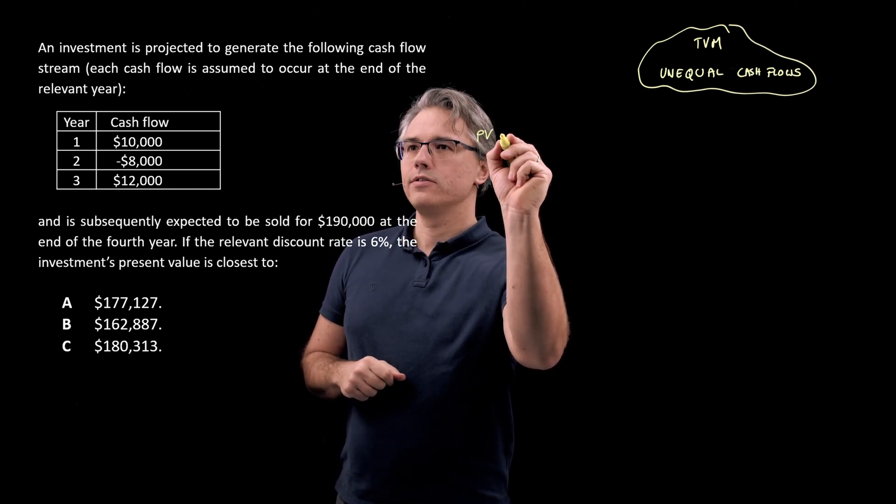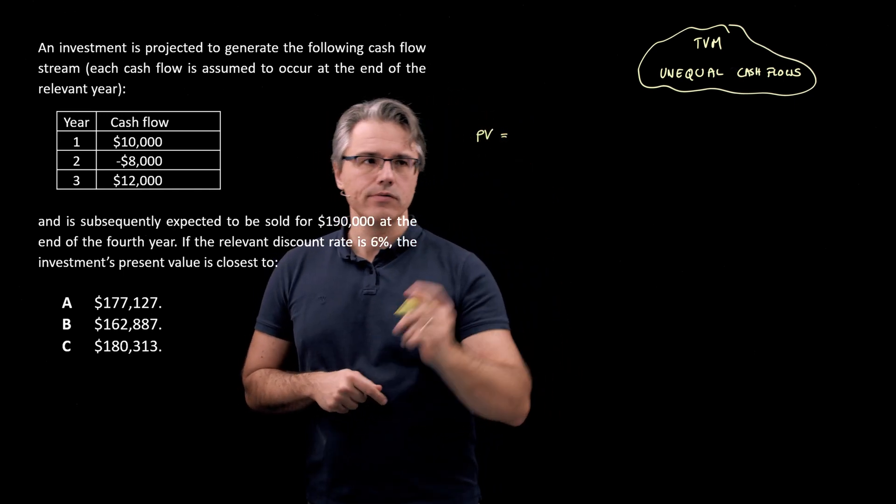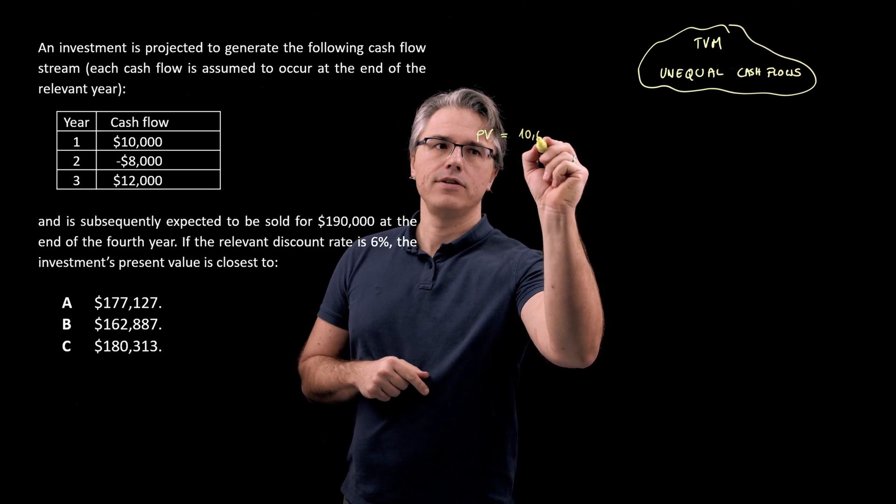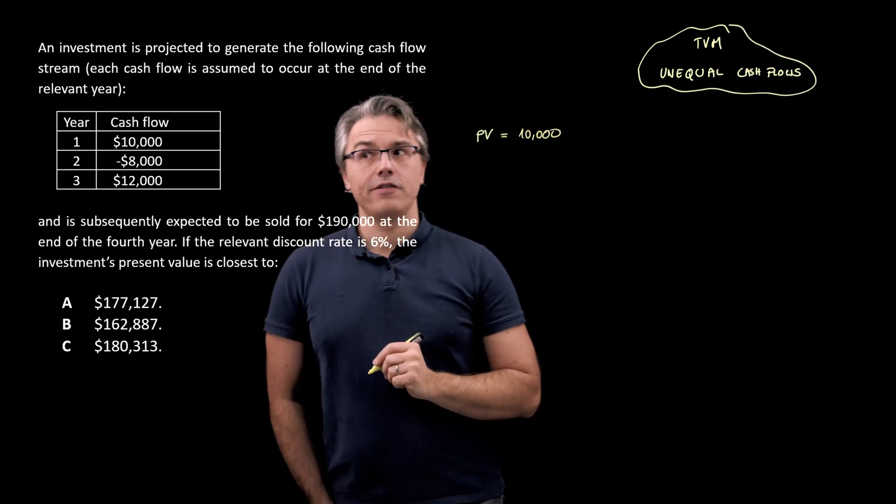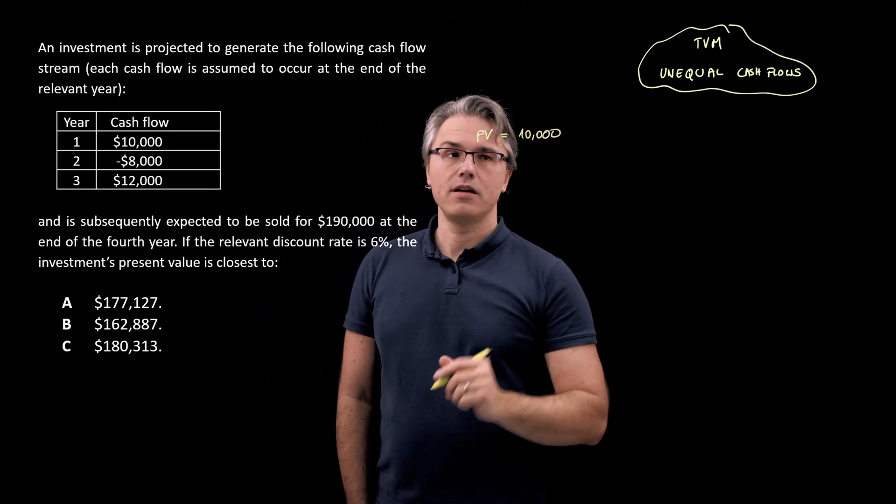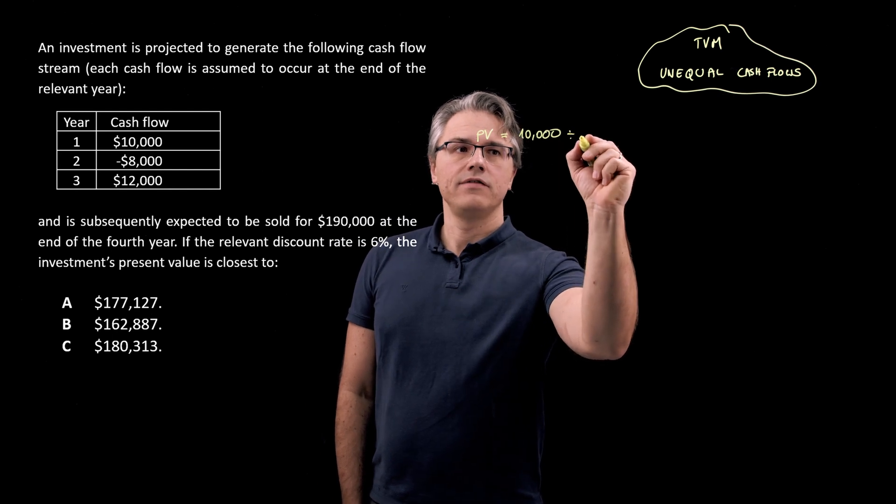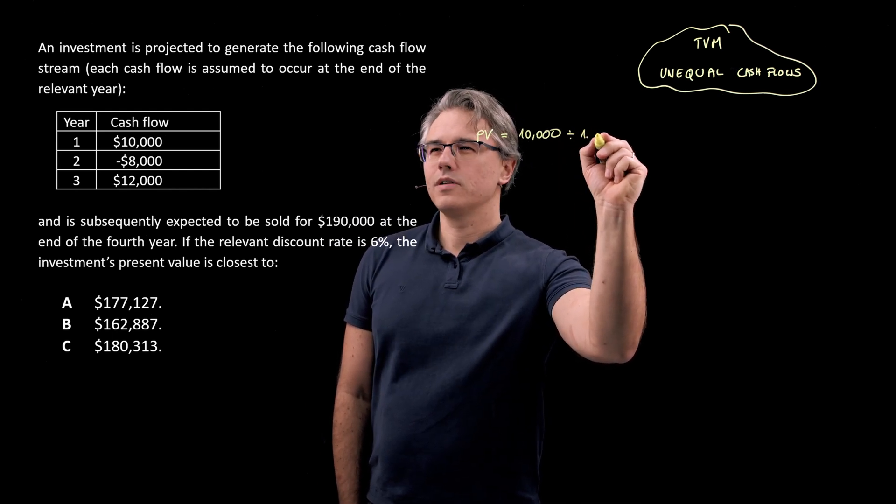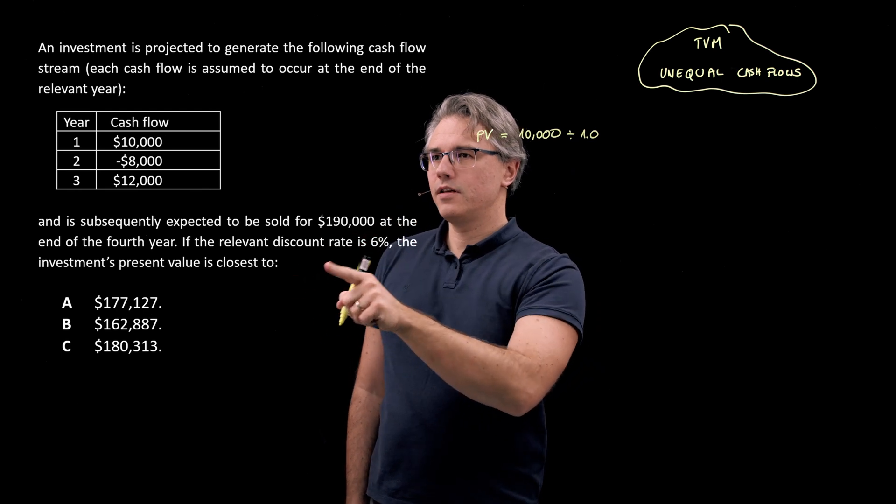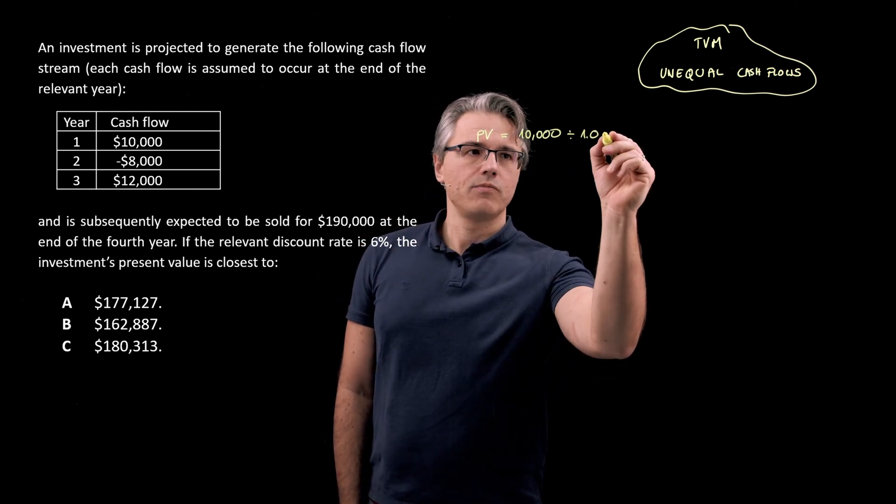So what I could do is say PV equals, and now I'm going to take each one of these cash flows. So the first one is $10,000, because it's one year away from today. I'll be divided by 1.0. Now, the interest rate here is 6%. So 1.06.